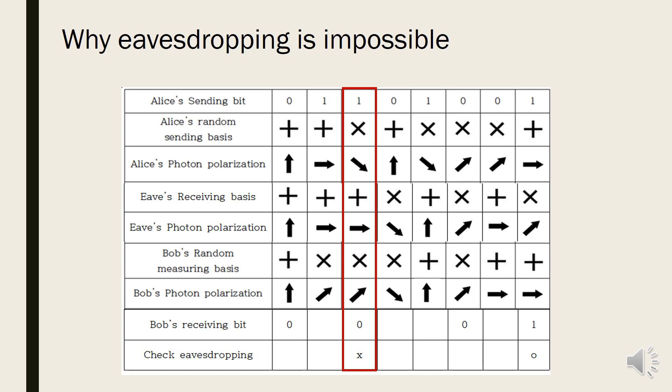And Bob checks with diagonal bases, which is same as Alice, but because of Eve's sending, he gets 45 degree polarized photon. So the sifted key for Alice is 0101, but Bob's key is 0001. Finally, they check the random part of the key, so if they check the second one, they can know existence of eavesdropper. This is why BB84 has high security.